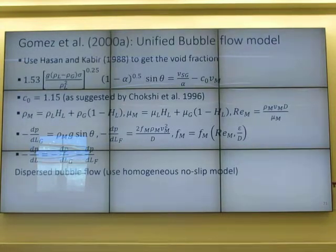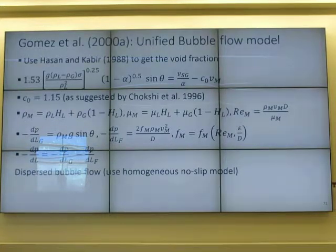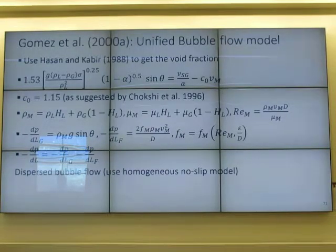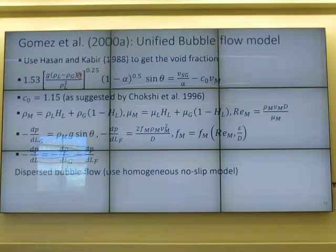For bubble flow, they use the Hazard correlation for void fraction calculation — it's a little more accurate. After getting the void fraction, take the weighted average for fluid properties, then calculate it like single-phase flow. The sigma in that equation has units of Newton per meter. The objective of this course is to calculate pressure drop per unit length.